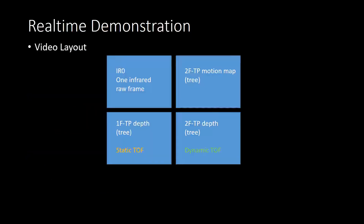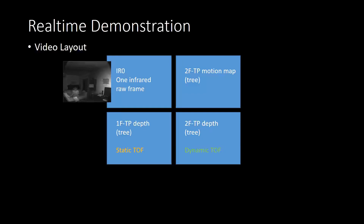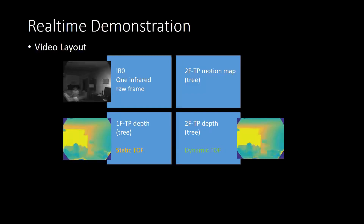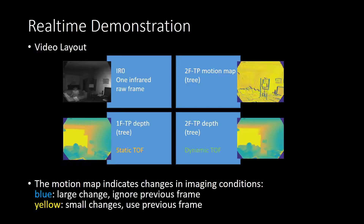In the video demonstrations, we will use the following layout. In the top left, we show one of the infrared frames. In the bottom row, we show the DEVS inference results — on the left, the static time of flight model, and on the right, the dynamic time of flight model. In the top right, we show the motion map statistic, which indicates whether the dynamic time of flight model uses information from previous frames.